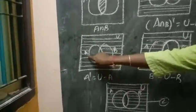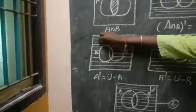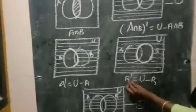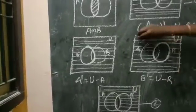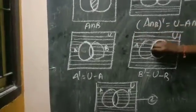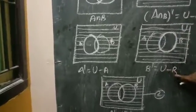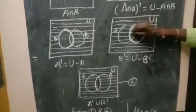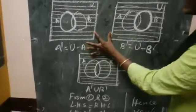Listen, students. These are A, these are B, these are U. So you shade all parts except A — that gives A'. Then B': B' is equal to the universal set minus B. So you shade all parts except B.